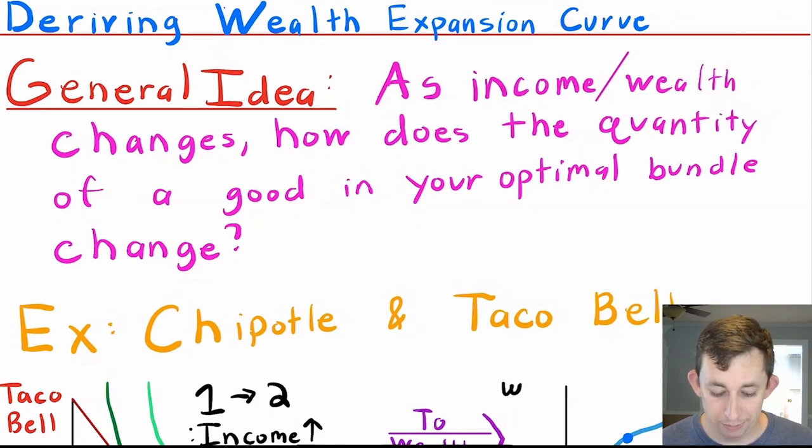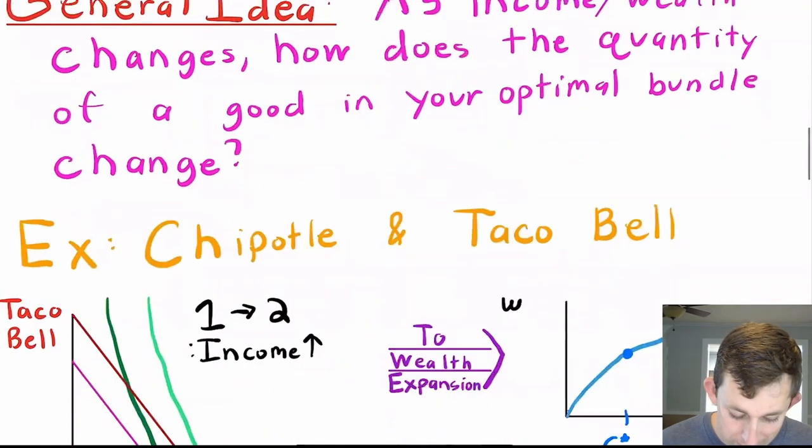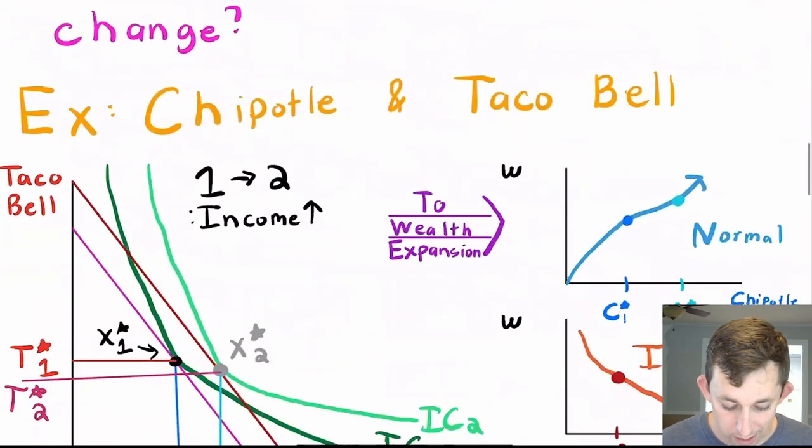Your general idea of wealth expansion is very similar to what we talked about with a price offer curve. With wealth expansion, we're thinking about how the optimal amount of a good in my bundle changes as my income or my wealth changes. A very similar example, we're going to use Chipotle and Taco Bell.